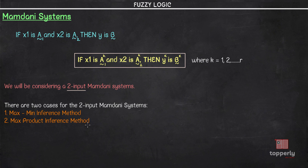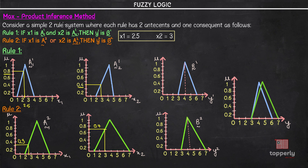Next, we move to the max-product inference method. Using the same example — a two-rule system with two antecedents and one consequent, inputs x1 = 2.5 and x2 = 3 — the first step is again to find the membership values, already found as 0.8 and 0.4. Since Rule 1 uses AND, we take the minimum, which is 0.4, and extend it onto the output graph.